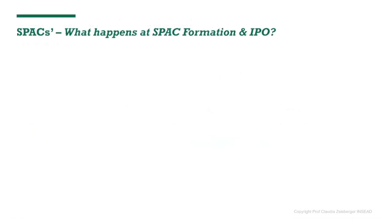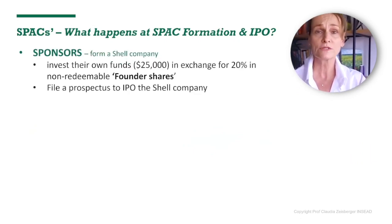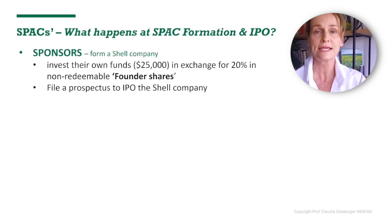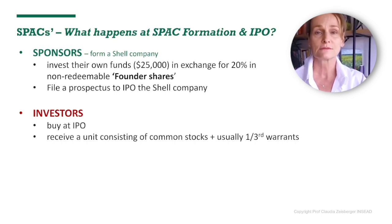Now let's go through it step by step. What happens at SPAC formation and IPO? First, the sponsor will form a shell company. The sponsor will invest its own funds into that shell company in return for a 20% stake, held in non-redeemable founder shares — that becomes important later on. Once the shell company has been created, they will file a prospectus and IPO the shell company, referred to as a shell company because it just has no business inside. The investors — institutionals, hedge funds and so on — buy at IPO and receive a unit consisting of common stocks and at times a one-third warrant attached to it.